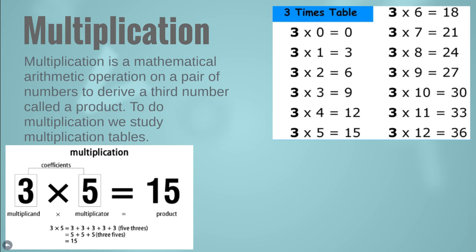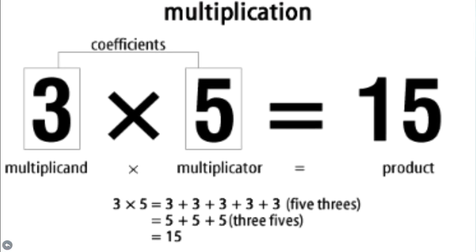To do multiplication we study multiplication tables. Here I have given an example with two coefficients: one is 3 and the other is 5. We call one the multiplicand and the other the multiplicator, and what we get as a result is our product. We can say this is 5 times 3, or 3 times 5 — both give the same result: 15.